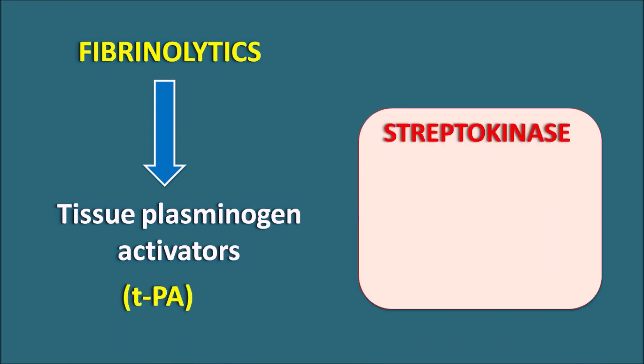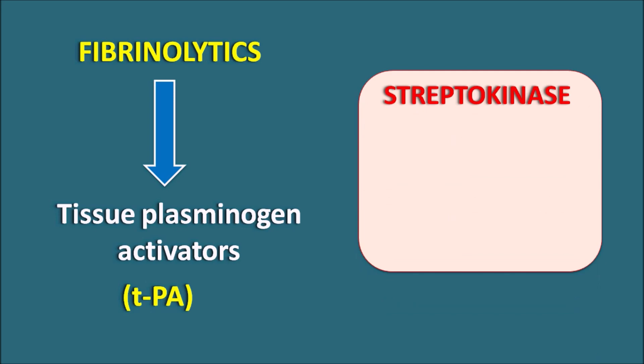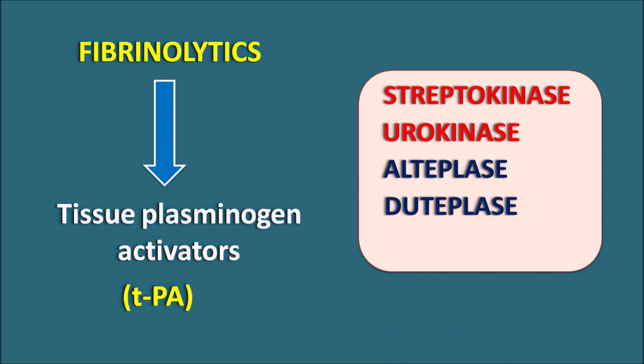We have a few other drugs like streptokinase, which is a natural extract coming from the streptococci. Similarly, urokinase is an enzyme present in mammals and found in urine as well as in the plasma. We can also have a few recombinant DNA technology products like alteplase, duteplase, and reteplase. All these drugs are ending with the suffix '-ase', which indicates these drugs are enzymes.